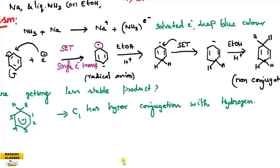By means of electron transfer, electrons move and you get a radical species - a radical anion, which is a two-electron system. The role of ethanol is only as a proton source. Ethanol supplies a proton which reacts with the electron, forming a bond. Then a second single electron transfer (SET) from the sodium-ammonia system gives another two-electron system.